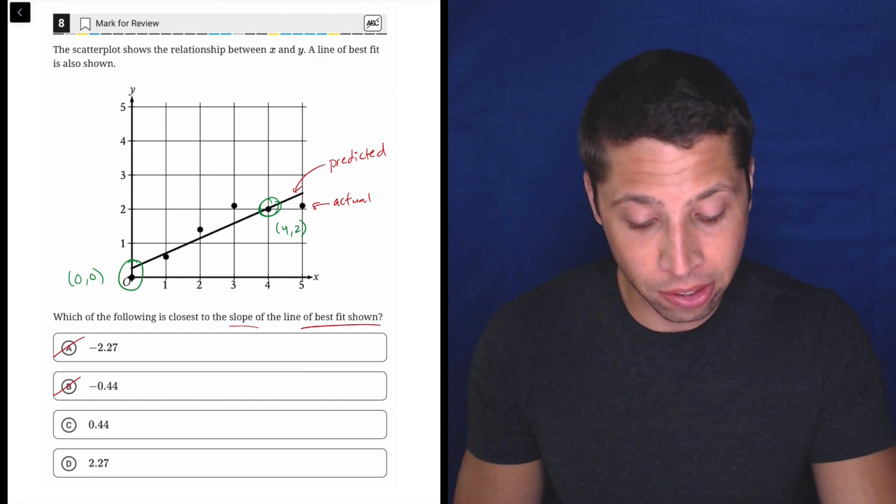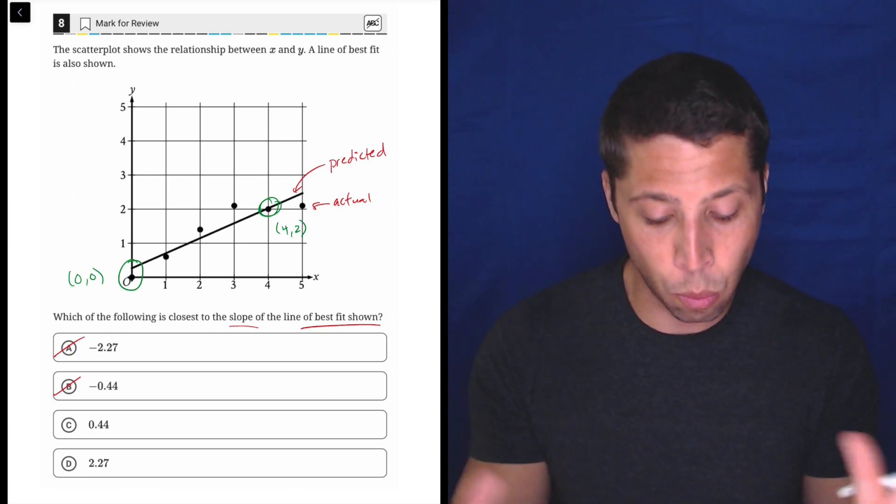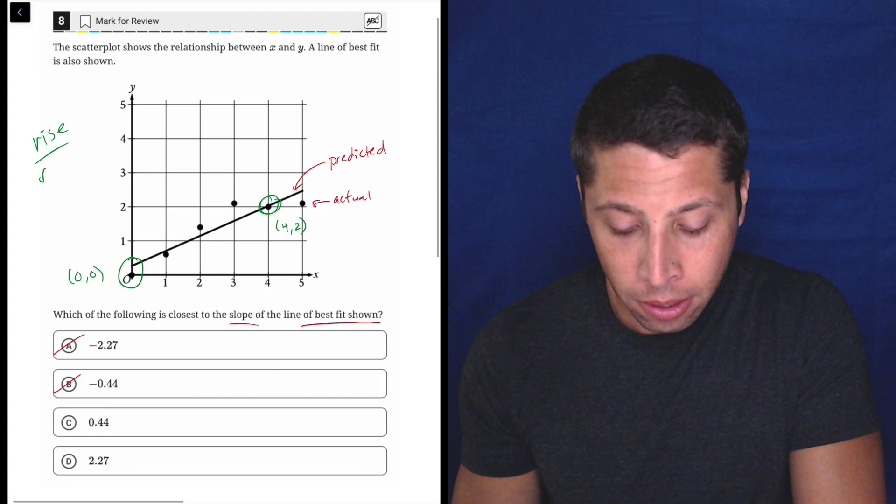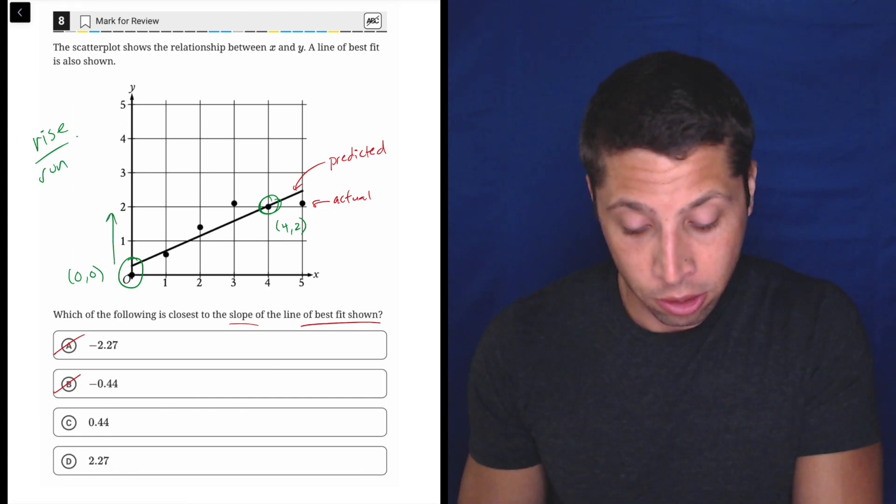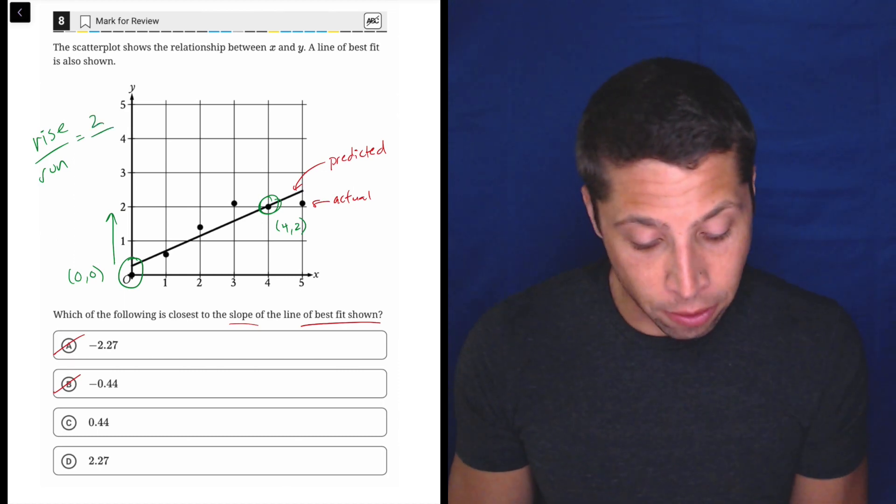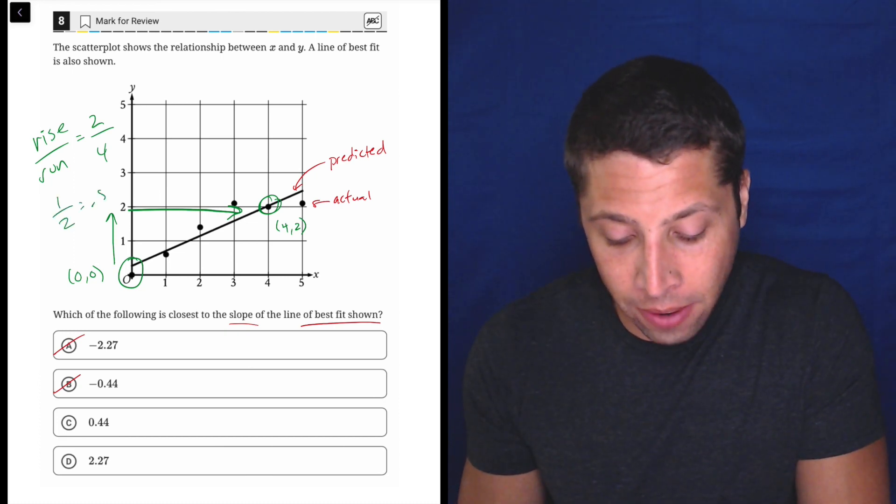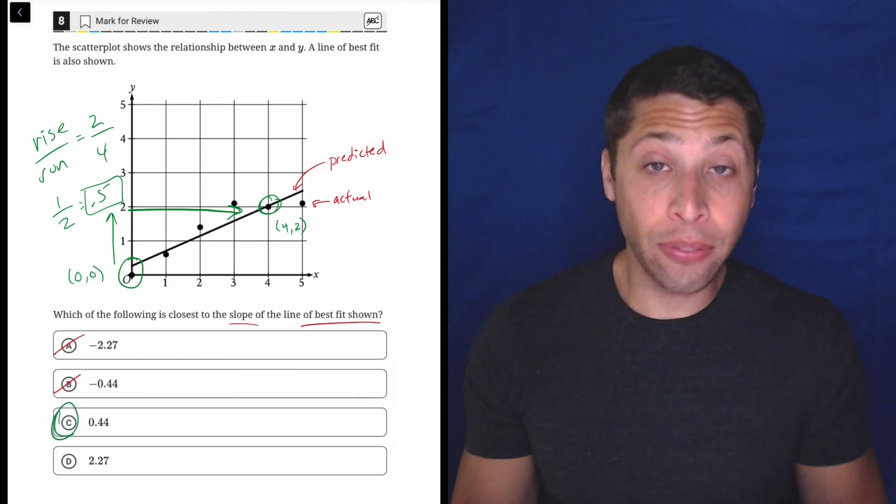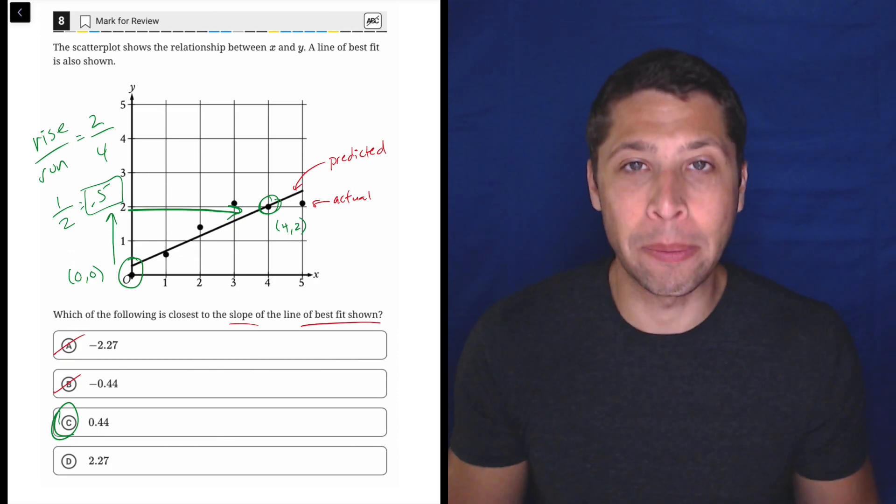If we think about slope in a traditional, just looking at the graph, the scale is fine. Each box is one, so we don't have to worry about the scale, but rise over run means we rise from the 0, 0 to this 2. So the rise is 2. And then the run is 4. And we can reduce that to one half or 0.5. So which choice is closest to 0.5? Well, yeah, definitely C. I mean, it's not halfway between. It's much closer to C. That's definitely going to be the answer. So this is a good example of don't do more work than you need.